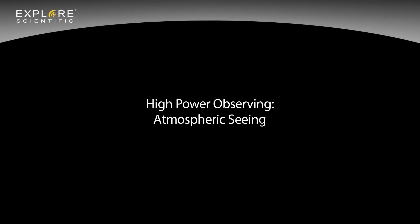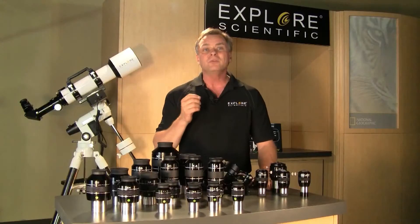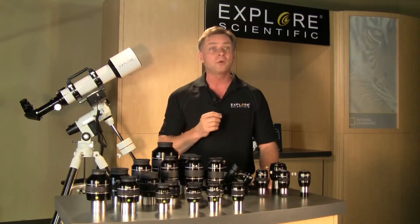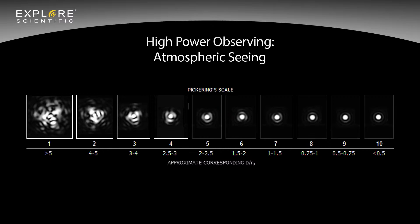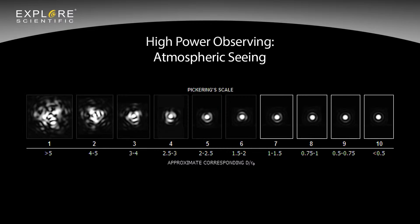Atmospheric seeing and the Pickering scale: the atmosphere can be very turbulent — called bad seeing — to perfectly calm, called perfect seeing. Turbulence in the air causes stars to scintillate or twinkle. Viewing conditions with bad seeing, one to four on the Pickering scale, distort images of stars, planets, and even the moon — and this distortion looks much worse with larger aperture and higher magnification. Viewing conditions with good to perfect seeing, seven to ten on the Pickering scale, allow telescopes to be used at higher magnifications, which will reveal fine details on every object you observe.